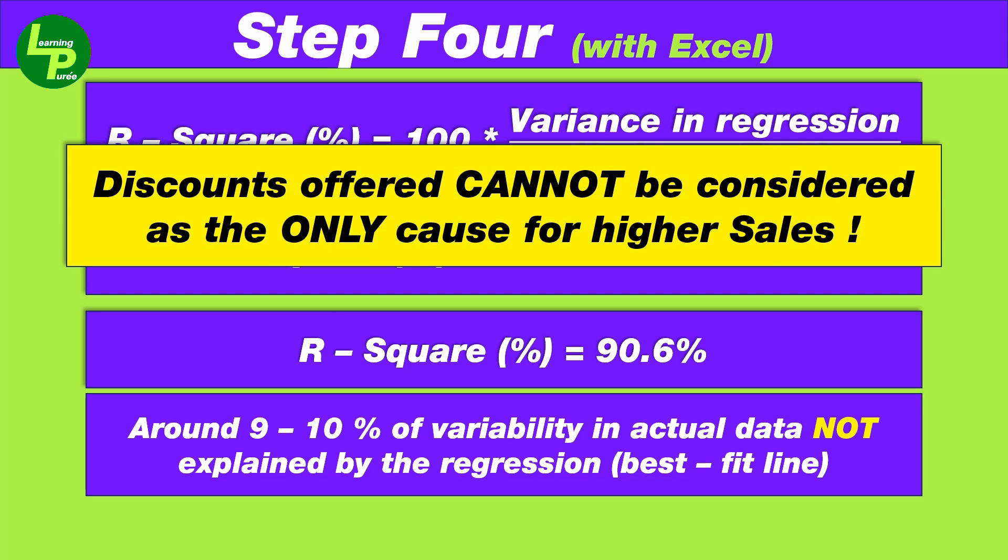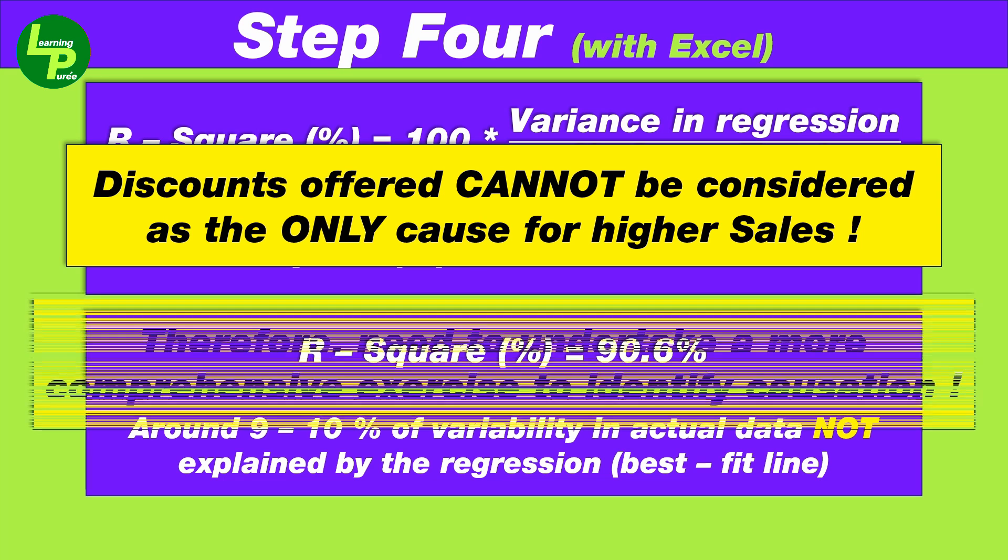Using coefficient of determination, we observe that about 9 to 10% of variation in the data is not explained by the best fit line. Hence, we cannot identify discounts as the only and complete cause for higher sales. This will lead us to undertake an exercise to identify other variables that contribute to higher sales. However, this is a crucial step over and above simply computing association between sales and discount provided.